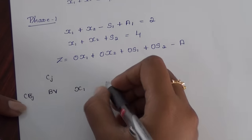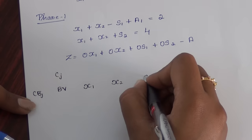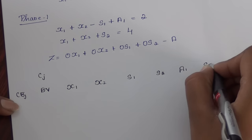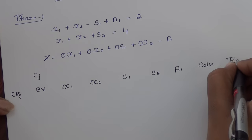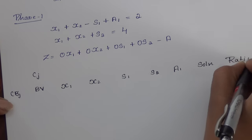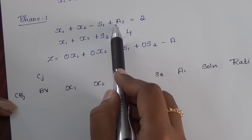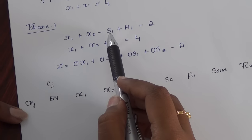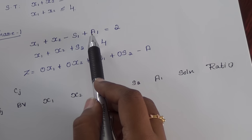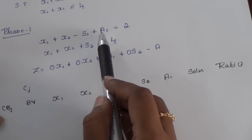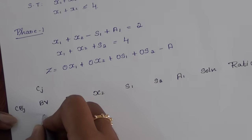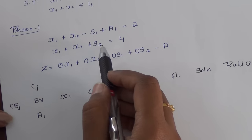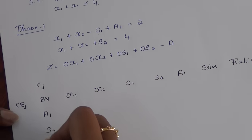I am specifying the variables x1, x2, s1, s2, a1, solution, and ratio. In the first constraint, higher priority is given to the artificial variable, then to the slack or surplus variable. Since the first constraint has the artificial variable, I take it as the basic variable. In the second constraint, I only have the slack variable, so I specify that there.